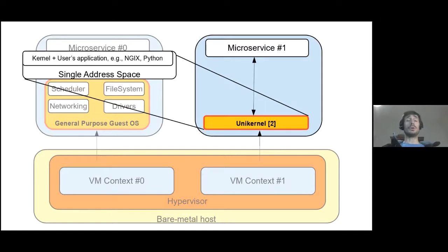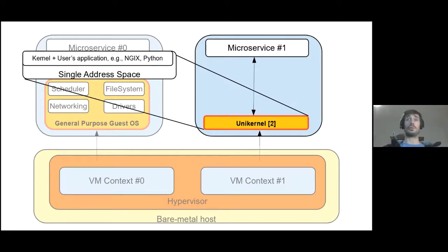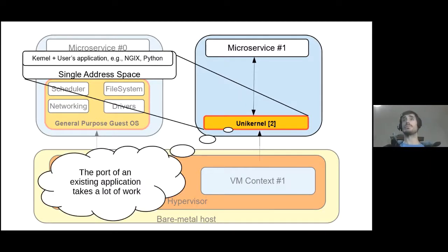In these approaches, the kernel and the application share the memory space. The kernel code and user code are combined into a single binary, and in most of these approaches there is no separation between user space and kernel space, no context switching, no paging, and syscalls are short calls to kernel code. However, the port of an application takes time and effort, so sometimes the unikernel must be redone for each new application that needs to be ported.